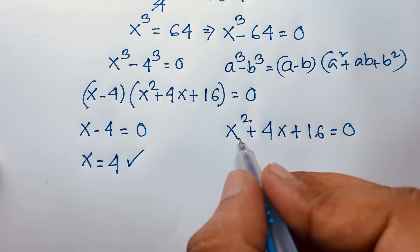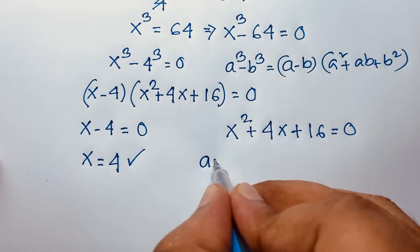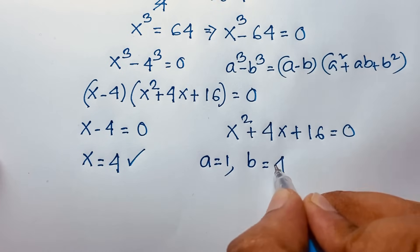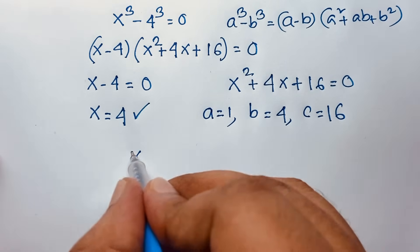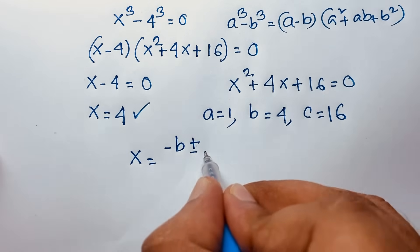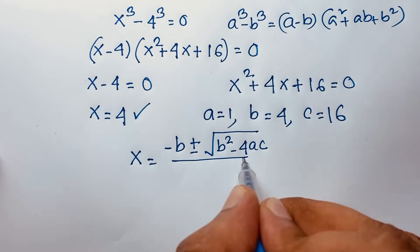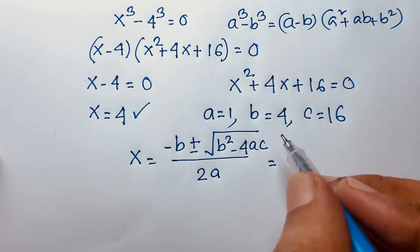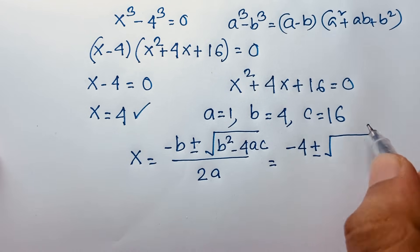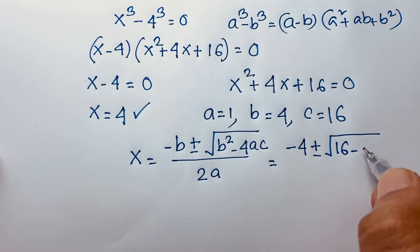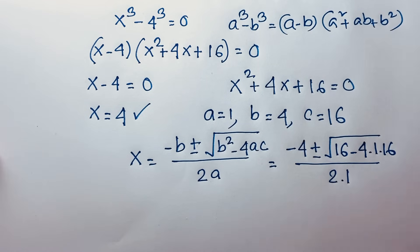Now for the quadratic equation x squared plus 4x plus 16 equals 0, we have a equals 1, b equals 4, and c equals 16. Applying the quadratic formula, x equals negative b plus or minus square root of b squared minus 4ac, all over 2a. Substituting: negative 4 plus or minus square root of 16 minus 4 times 1 times 16, over 2 times 1.